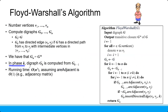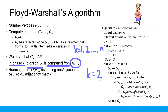If K goes from 1, 2 until N, then the GK for K equals 2 will be based on G1, and G1 is when K equals 1. The running time of this Floyd-Warshall algorithm takes O(n³), assuming all vertices are adjacent and adjacency check is O(1).